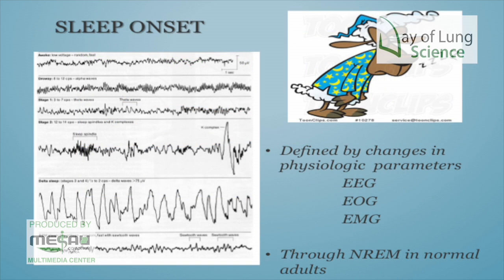Looking at sleep onset within the EEG — you can see changes in the different waves. When you get into a deeper sleep you get into more slow wave activity, K-complexes and similar patterns. When more awake the brain activity is more erratic. You can see the changes in the stages of sleep when you have a full EEG running.